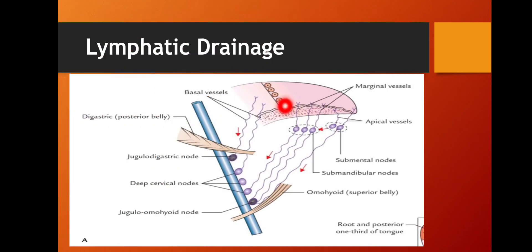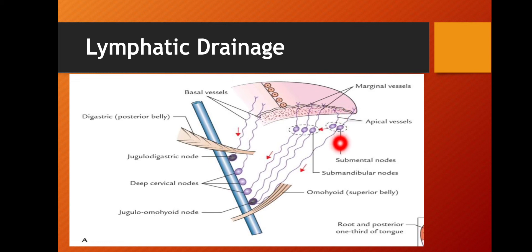Lymphatic drainage. See in this picture — this is the tongue. There are some apical vessels that drain lymph from the apical portion of the tongue. These apical vessels drain into the submental nodes. From the submental nodes they drain either into the deep cervical nodes or jugulo-omohyoid.